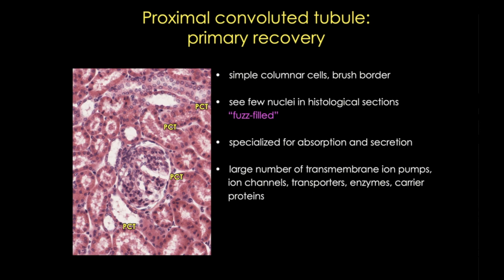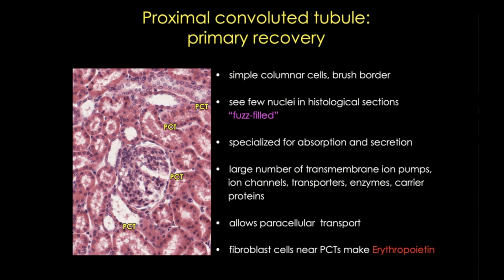These microvilli greatly increase the surface area and are part of the specializations that allow for absorption and secretion. Just like intestinal epithelial cells, they contain large numbers of membrane transporters. Some substances are also transported paracellularly — that's between cells — so these epithelial cells also contain tight junctions to help regulate flow. Finally, interstitial cells around the proximal convoluted tubule epithelium produce erythropoietin, which drives red blood cell production. So it's the fibroblasts in the interstitium, not the proximal convoluted tubule cells themselves, that produce EPO.